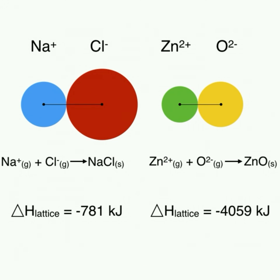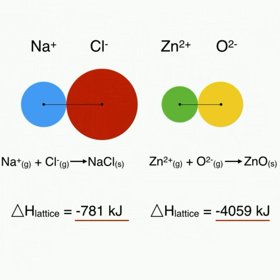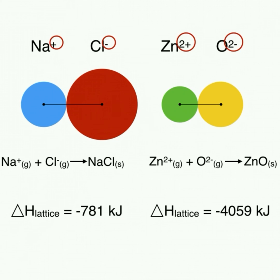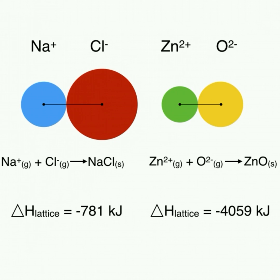Here we can see the lattice energies for sodium chloride and zinc oxide. The lattice energy for the zinc and oxygen ions coming together is much greater than the lattice energy for sodium and chlorine ions coming together. This is because lattice energy increases as the charges on the ions increase and as the atomic radii decrease. Smaller ions with large charges have the strongest bonds with each other and thus have the greatest lattice energies.